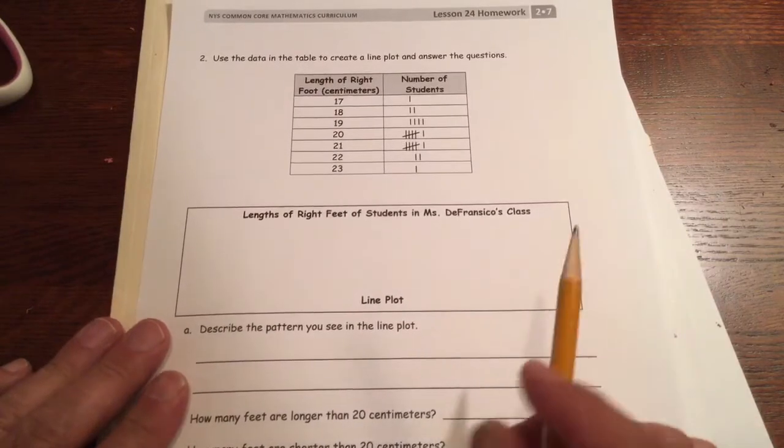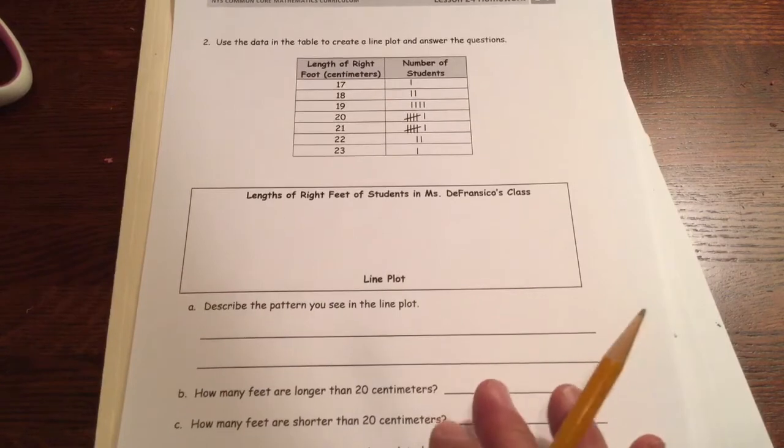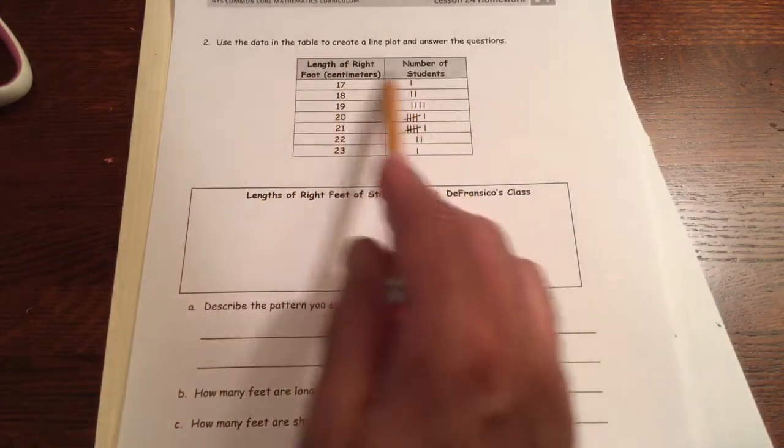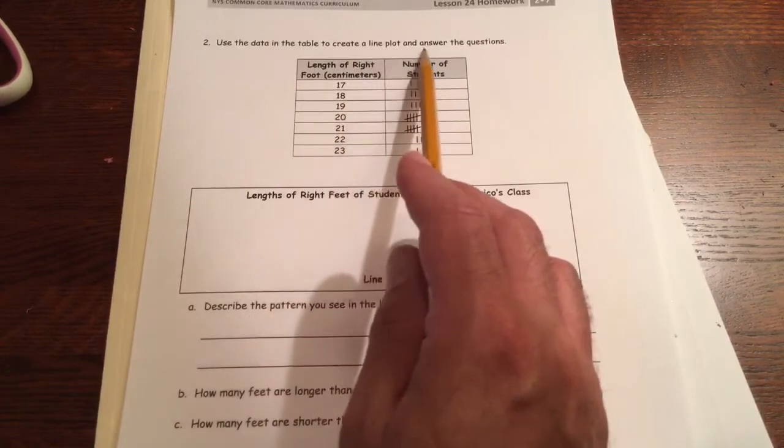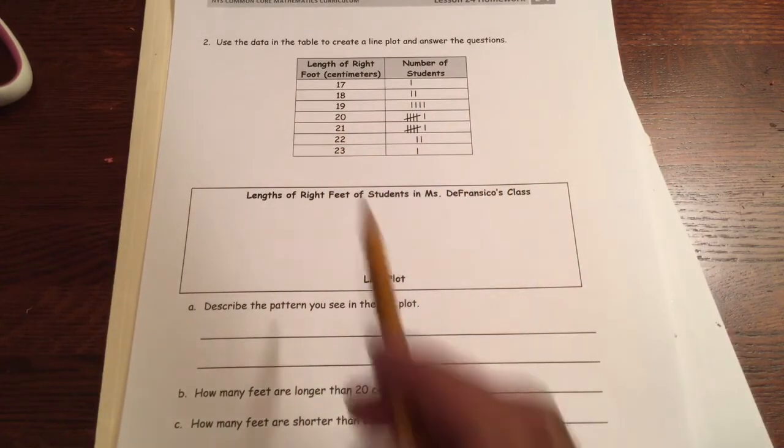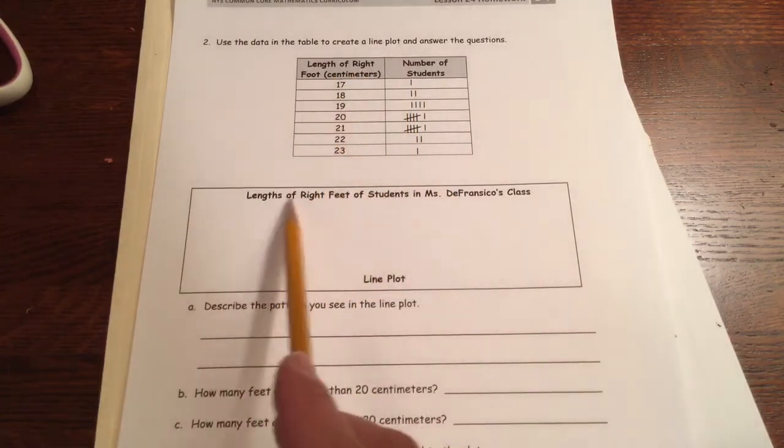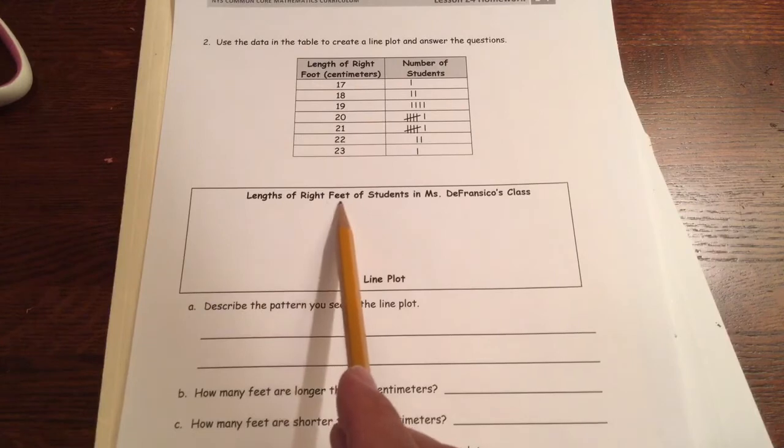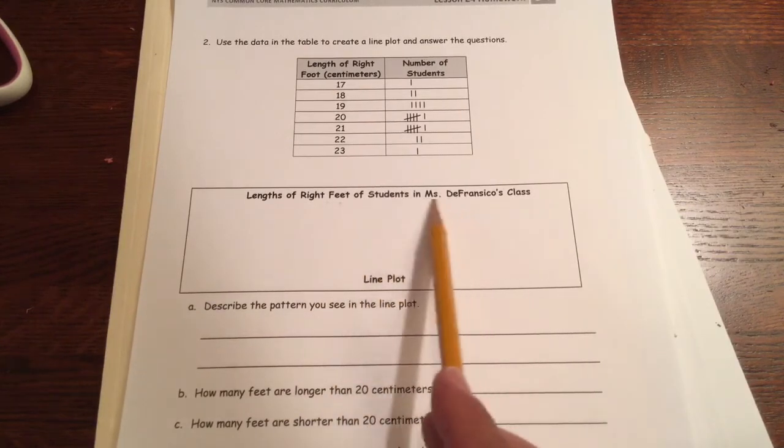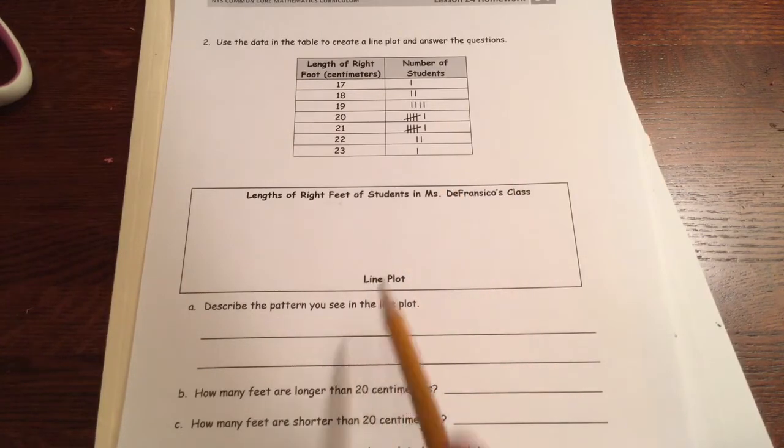Number two, now we're gonna make our own line plot. A lot of it is set up for us already. We're using the data in the table, that's this table right here, to create a line plot and answer the questions. We've got questions to answer afterwards. And we've got, looks like a class that has measured their right foot. Every student in the class measured their right foot of Ms. DeFrancisco's class. And this is the line plot for it.